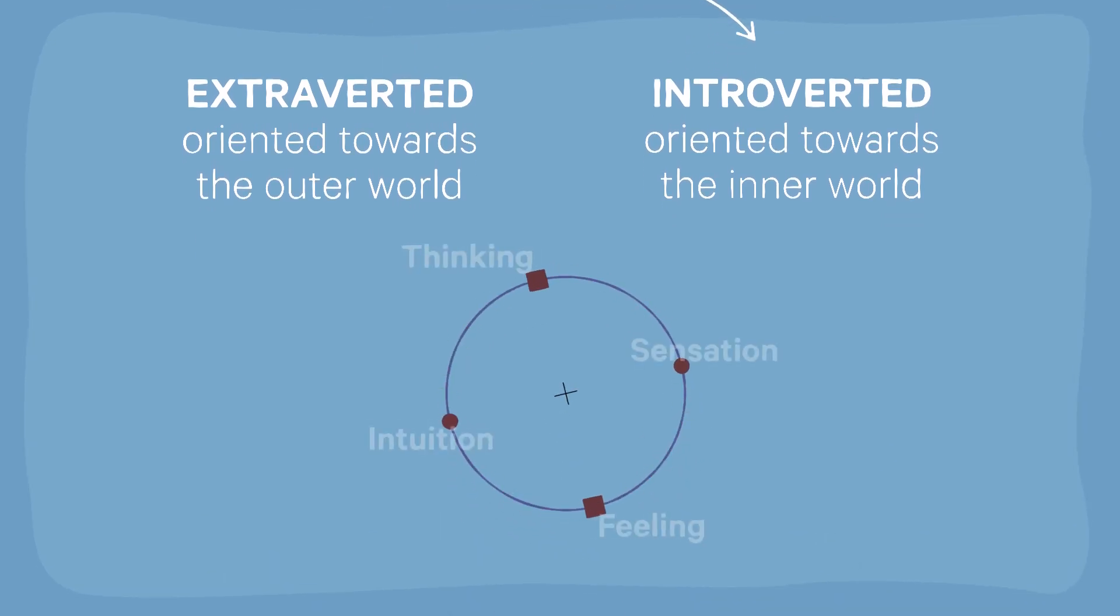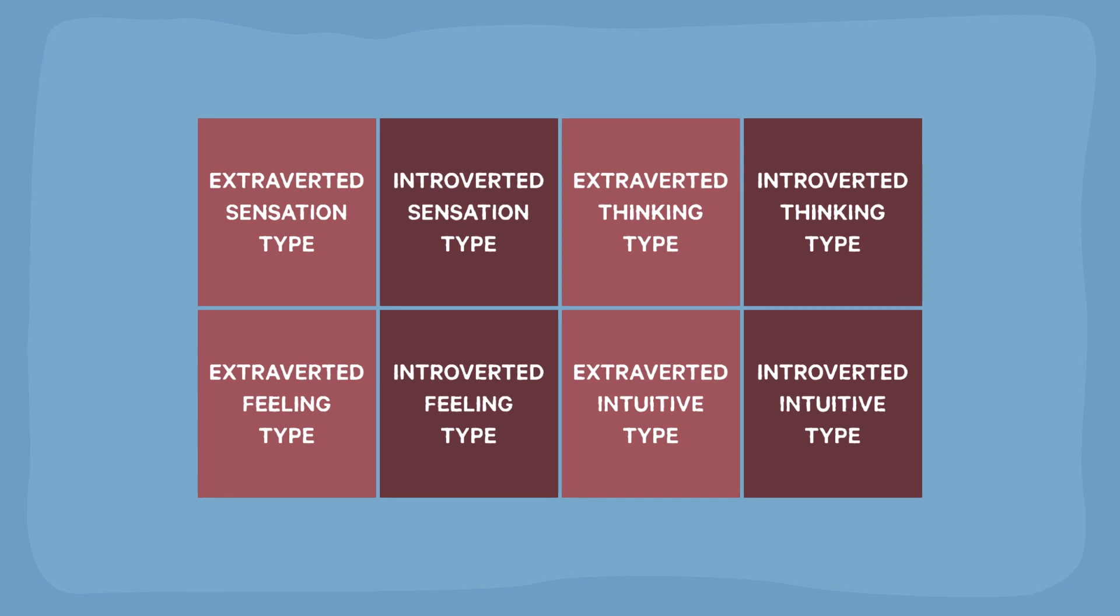The combination of these two attitudes and the four functions make it theoretically possible to describe eight psychological types.